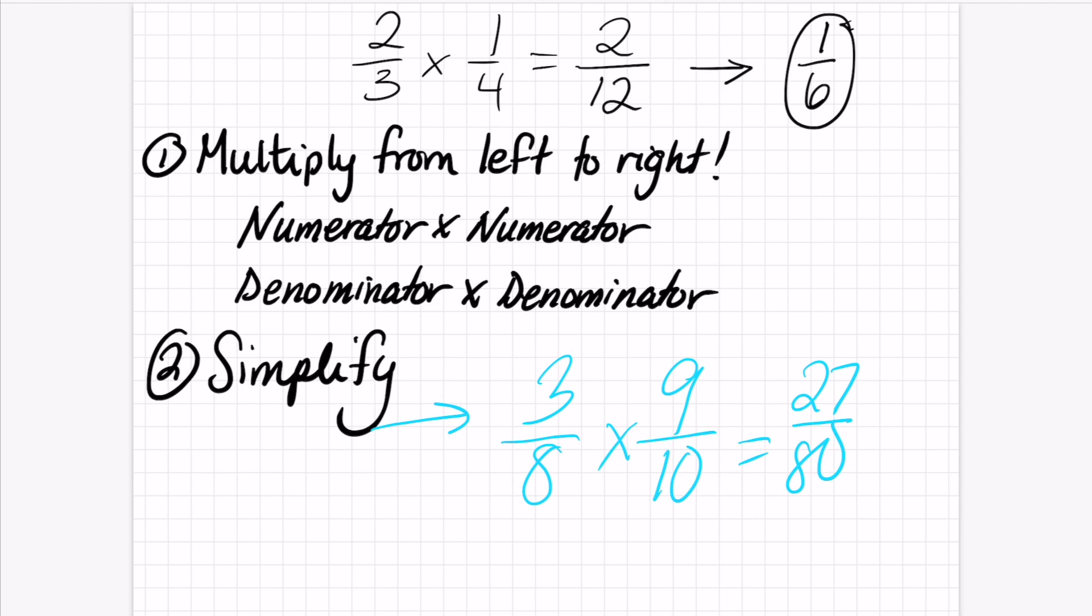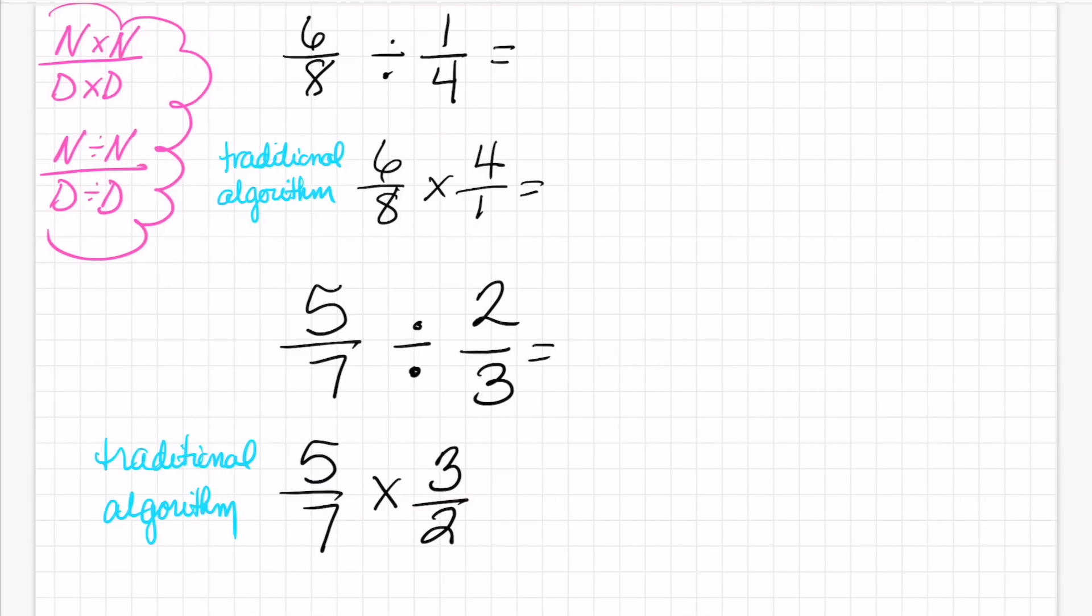So why can't division work like this? And the more I thought about it, I figured, well, why can't that? So we're going to jump right in. What if we just did the same thing with division that we did with multiplication? And I'm going to start with an easy example with numbers that really work.